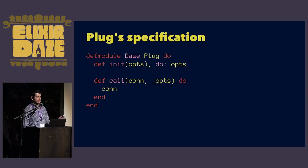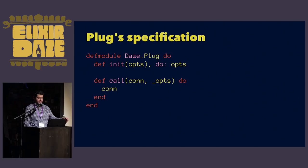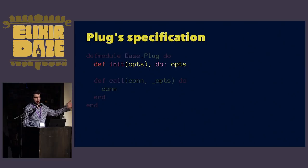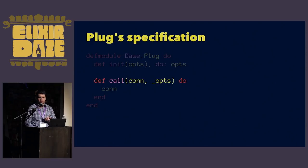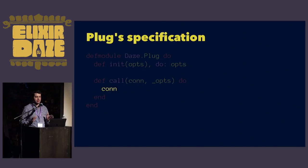Plug is both a specification and a set of modules and functions that help you interact with a plug connection struct. The module plug specification requires you to define an init function that takes a set of options and returns a modified set of options. It also requires you to define a call function that takes two arguments: a connection struct, which has all the request and response data, and the set of options. The init function gets called once, the call function gets called every time, and you must return a connection struct.